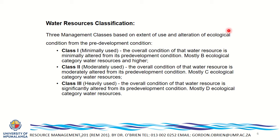A refers to a pristine, natural ecosystem — no human impact whatsoever. F is completely transformed: the river is now a canal with no life, water quality so bad that nothing can live in it, and if you use that resource you'd probably get sick. What do you think the condition is of most rivers in the Kruger National Park?